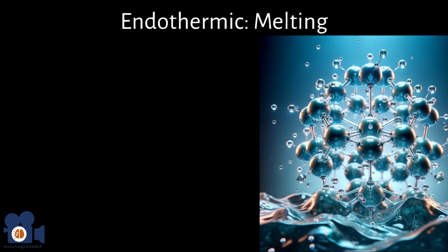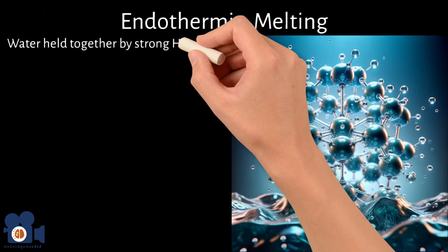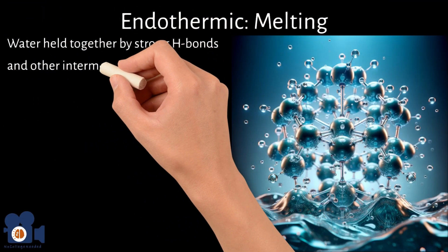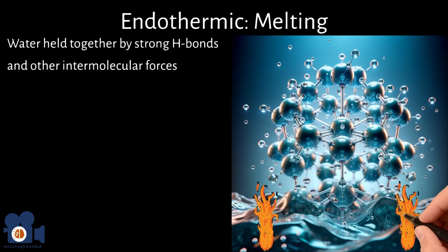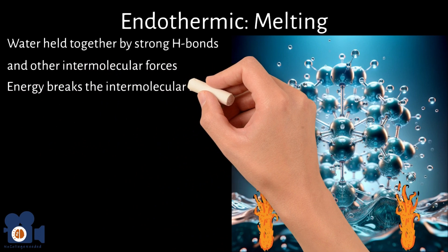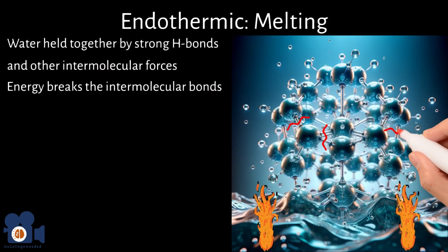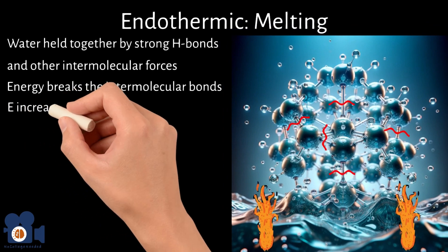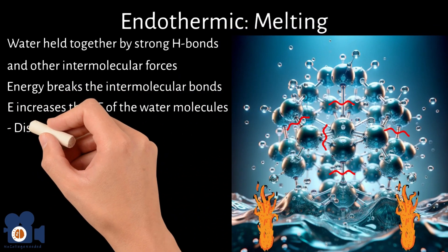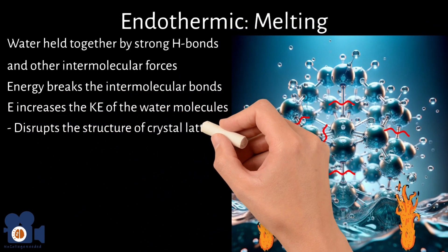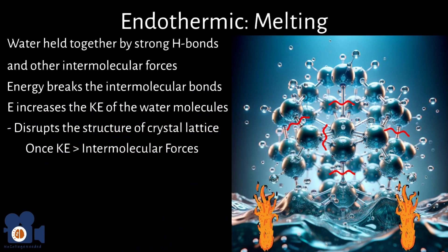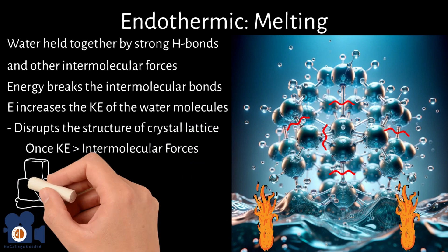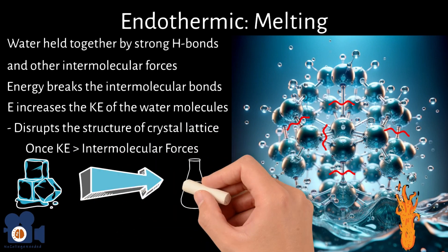During melting, the water molecules are held together by strong hydrogen bonds and other intermolecular forces. As heat is applied, this energy breaks these intermolecular forces between the molecules in the ice lattice. The absorbed energy increases the kinetic energy of the water molecules, which disrupts the organized structure of the solid crystal lattice. Once the kinetic energy overcomes the intermolecular forces holding the molecules together, the ice transitions to a liquid state.